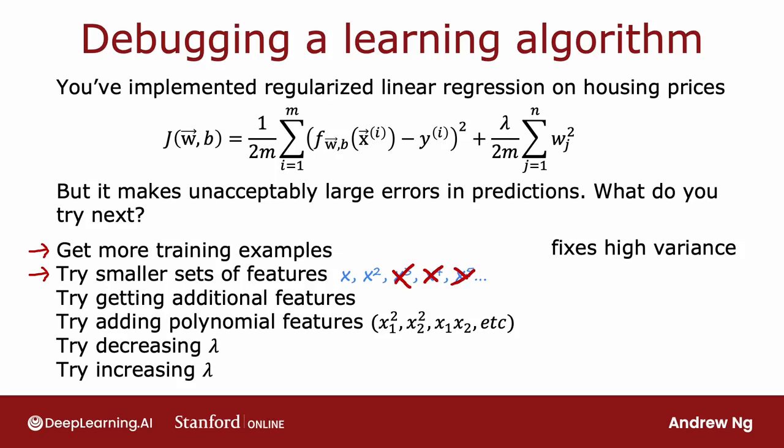So if you suspect that your algorithm has a lot of features that are not actually relevant or helpful to predicting a housing price, or if you suspect that you had even somewhat redundant features, then eliminating or reducing the number of features will help reduce the flexibility of your algorithm to overfit the data. And so this is a tactic that will help you to fix high variance.